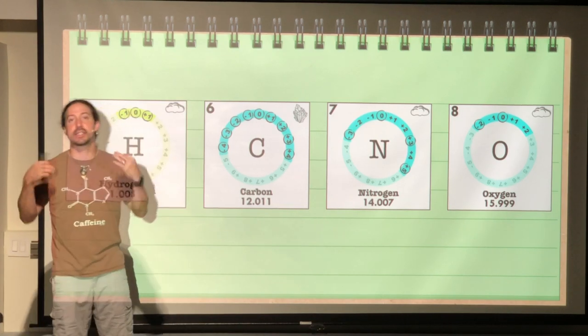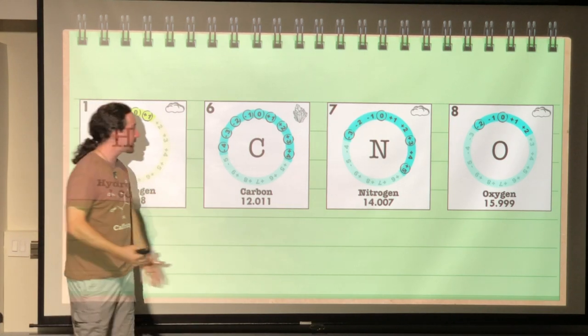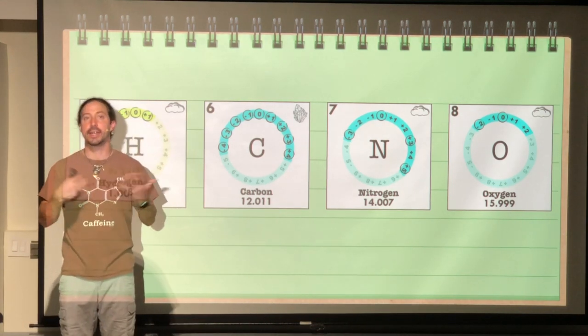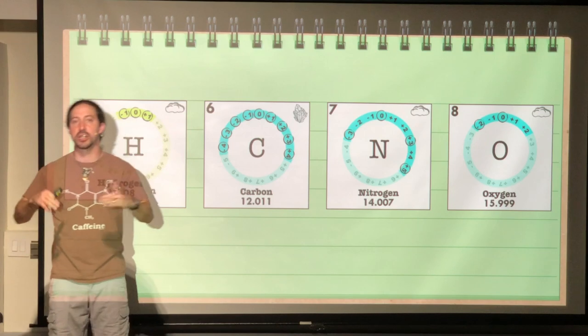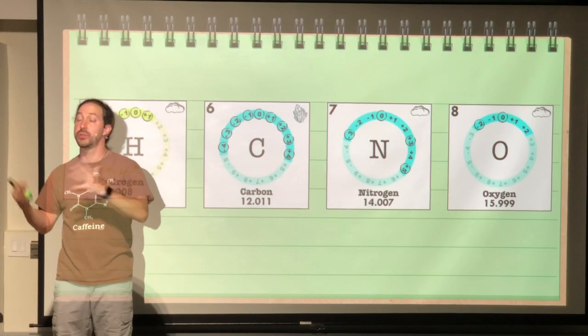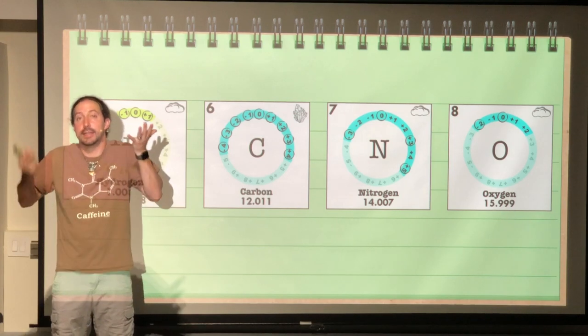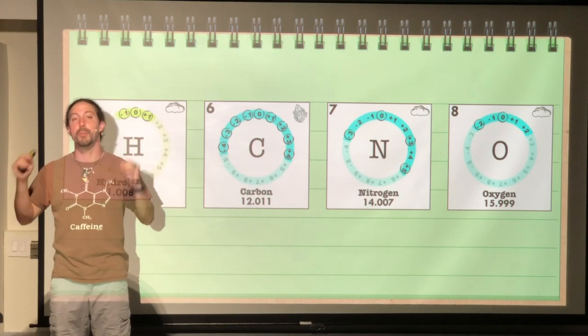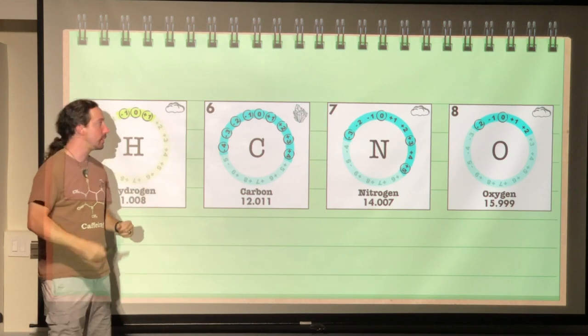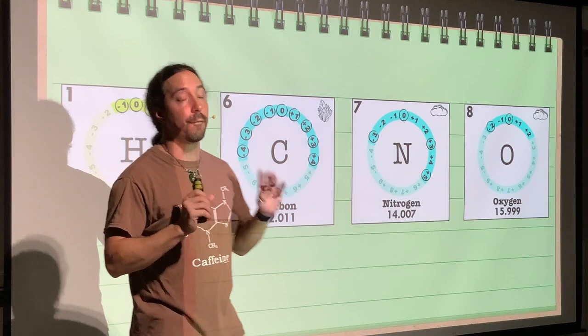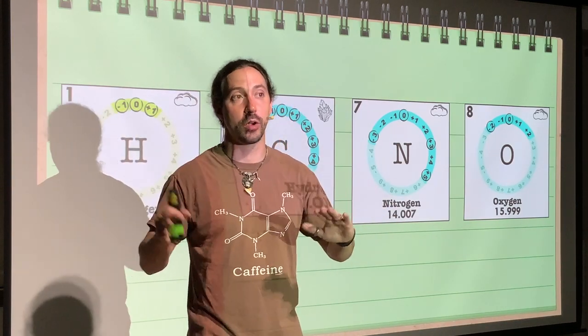Nitrogen, it has seven protons in its nucleus. And oxygen, it has eight protons in its nucleus. And again, just like before, they each have an equal number of electrons to their number of protons because they need to balance out completely. They need to be completely neutral to be an atom.